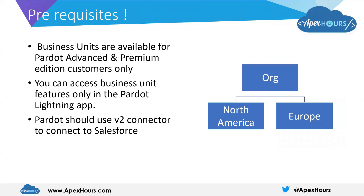So what are the prerequisites of having multiple business units? Business units are available for Pardot Advanced and Premium edition customers only. For Basic editions, you will only get one business unit. For Advanced and Premium edition customers, you will get multiple business units — that is, multiple orgs. By default, you get two business units with the Advanced edition.